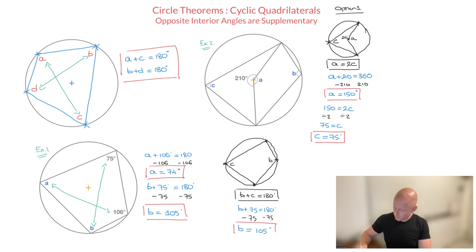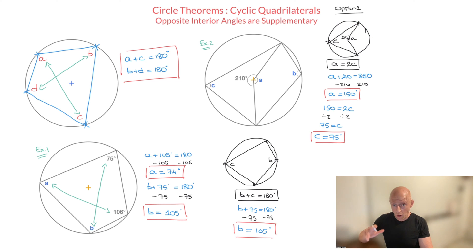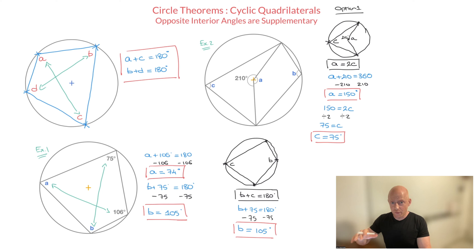And we're done. Using the cyclic quadrilateral theorem as well as the angle at the center theorem, we've just found all three angles A, B, and C. Now, as I said earlier, we had two options for the angle at the center theorem. So to finish this, let me quickly show you the second option.